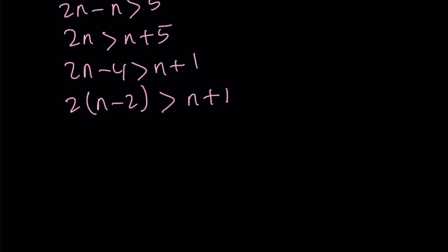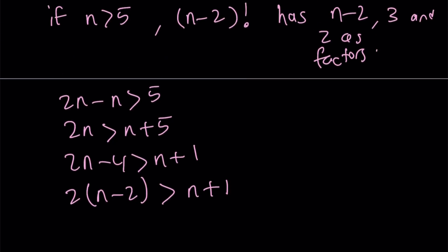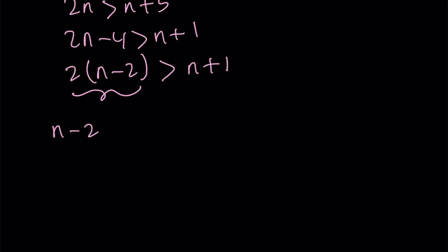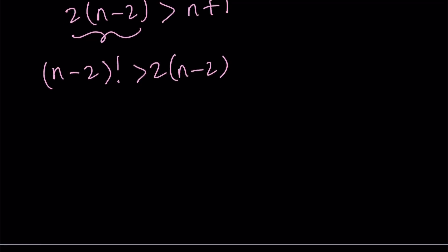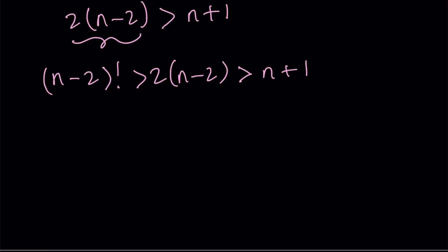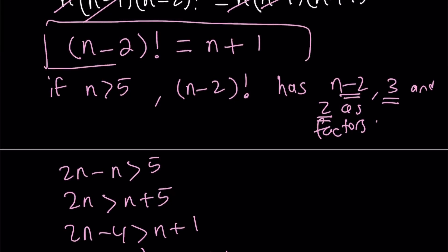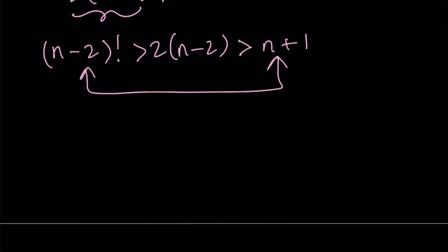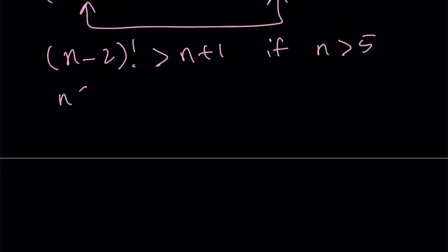Since we know that 2 times n minus 2 is greater than n plus 1, and we also know that n minus 2 factorial has n minus 2, 2, and 3 as factors, we can write: n minus 2 factorial is greater than 2 times n minus 2, which is greater than n plus 1. So if n is greater than 5, then the left hand side of the equation is going to be greater than the right hand side. Therefore, they can never be equal. That means there are no solutions for n values greater than 5, so we're looking for values less than or equal to 5.